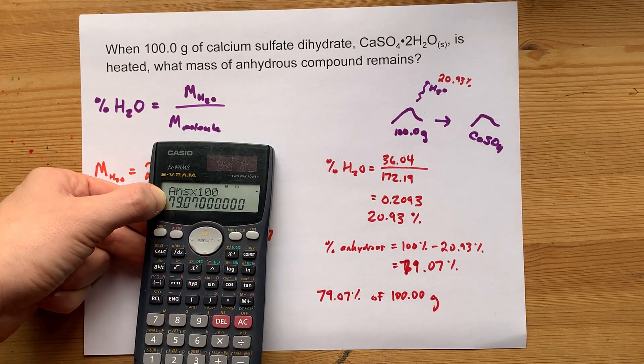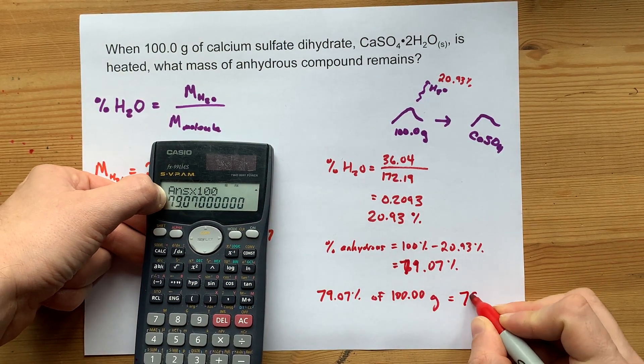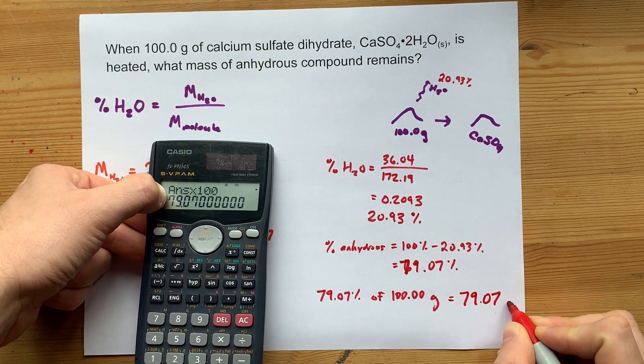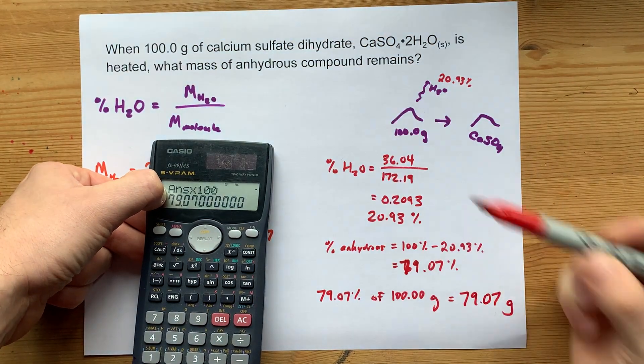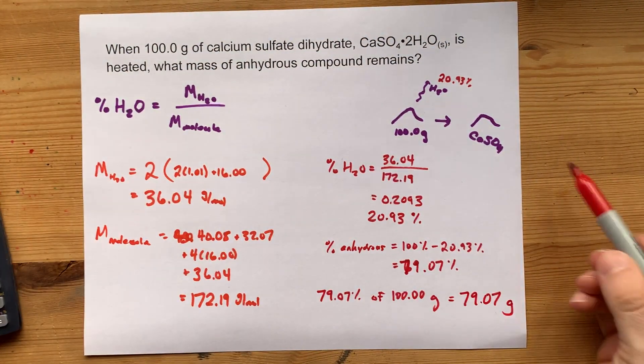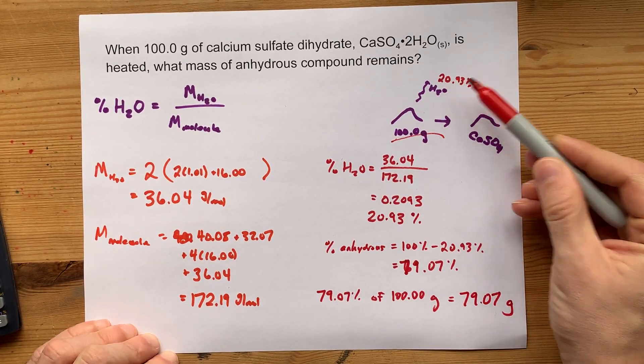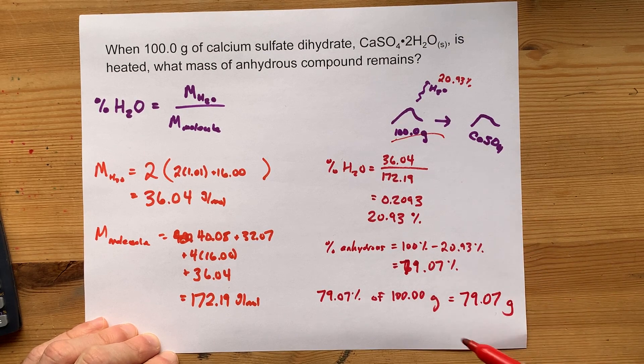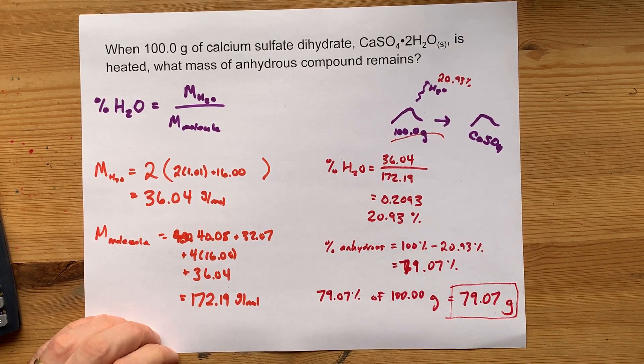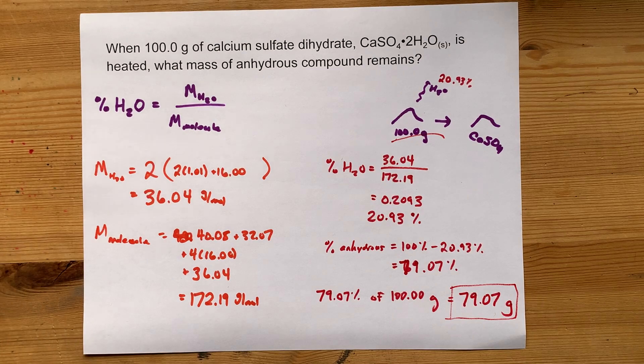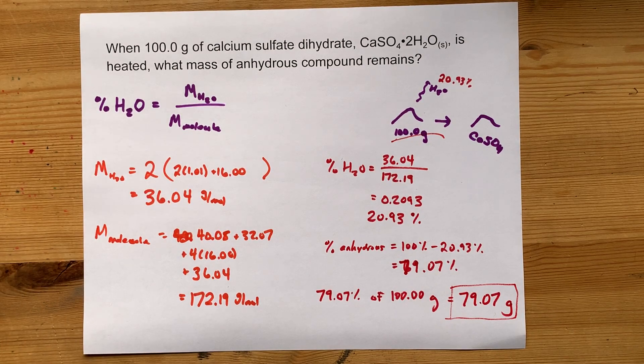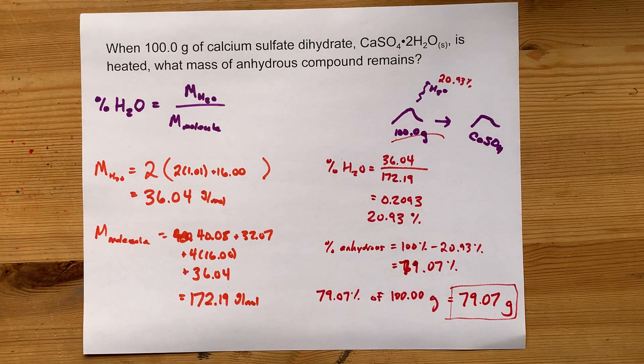For me, that was super easy. It ends up giving me 79.07. But it doesn't matter how complicated the number you were given is. The point is, 100 grams of the dihydrate lost 20.93% of its mass, and so you're left with 79.07 grams of the anhydrous compound. Thanks for being with me, and best of luck.